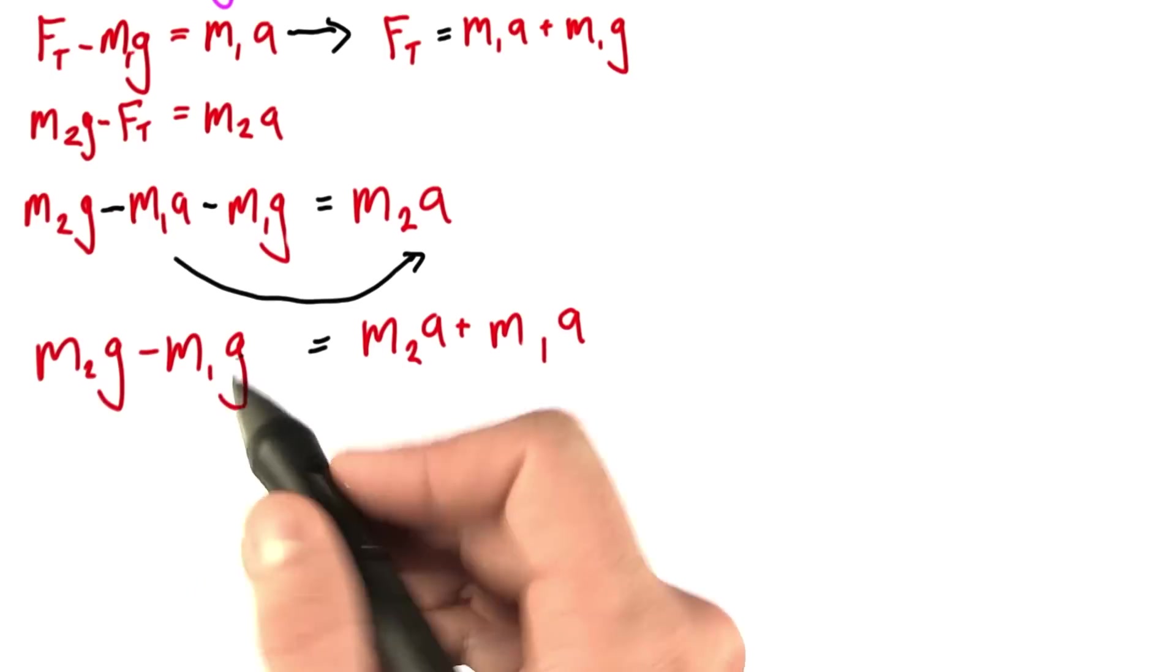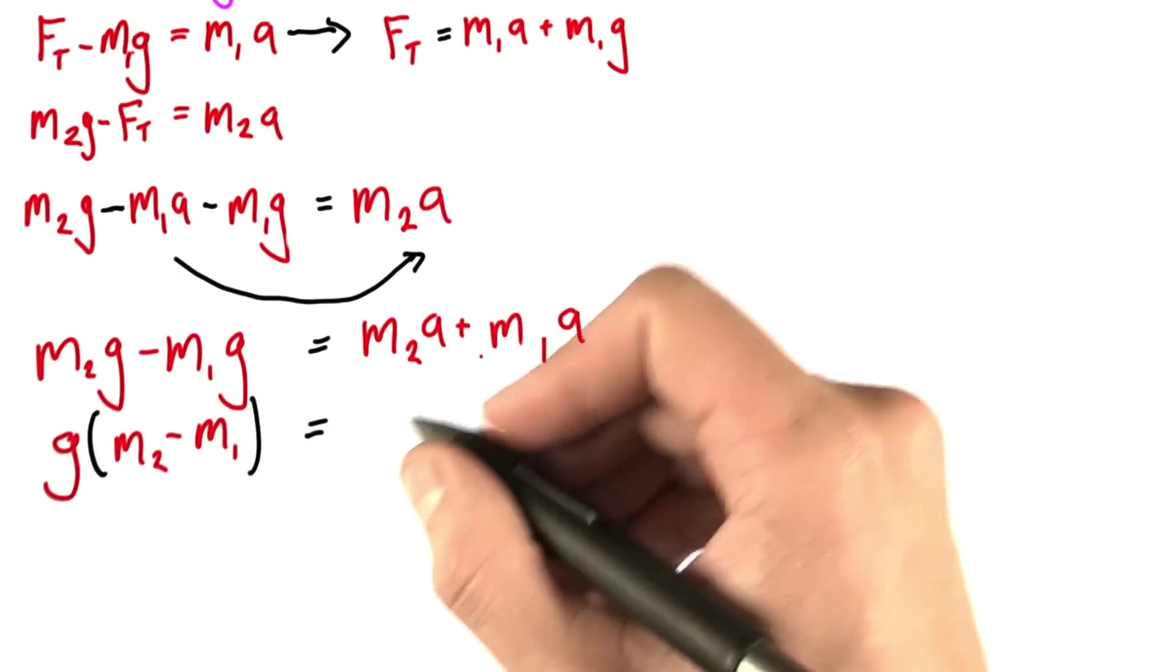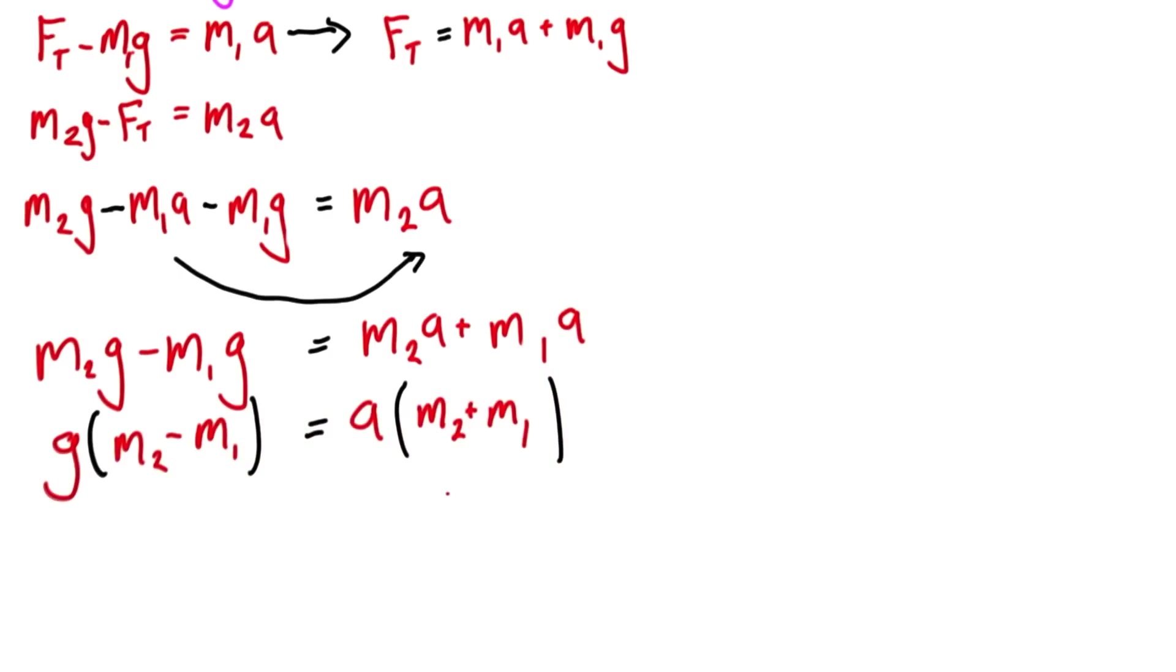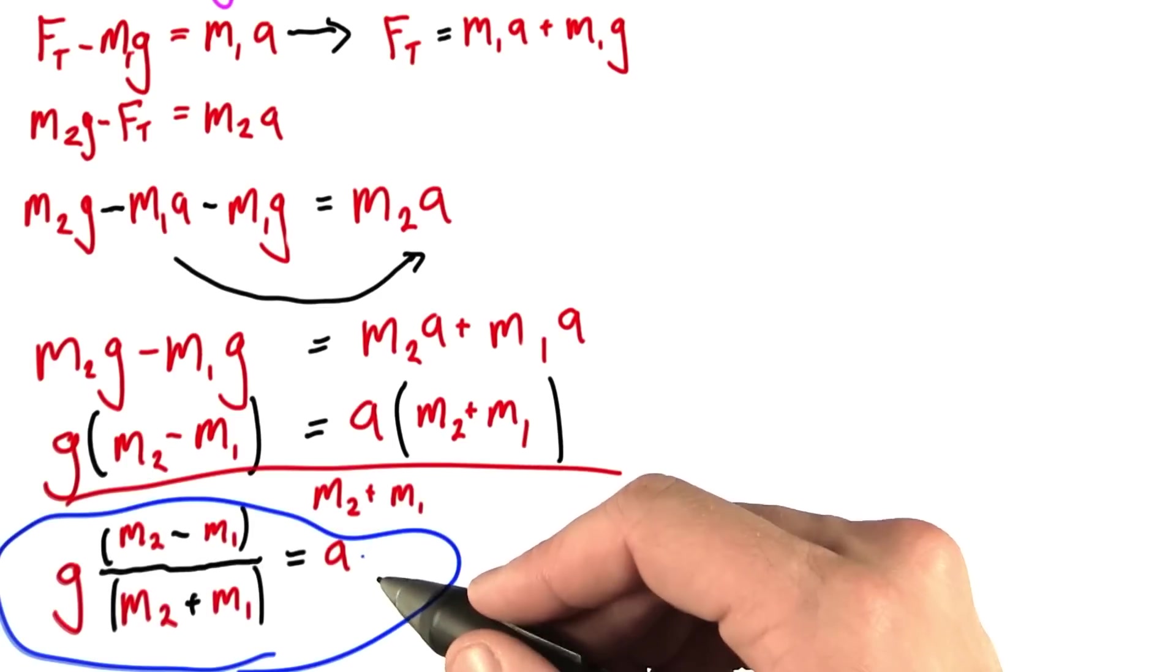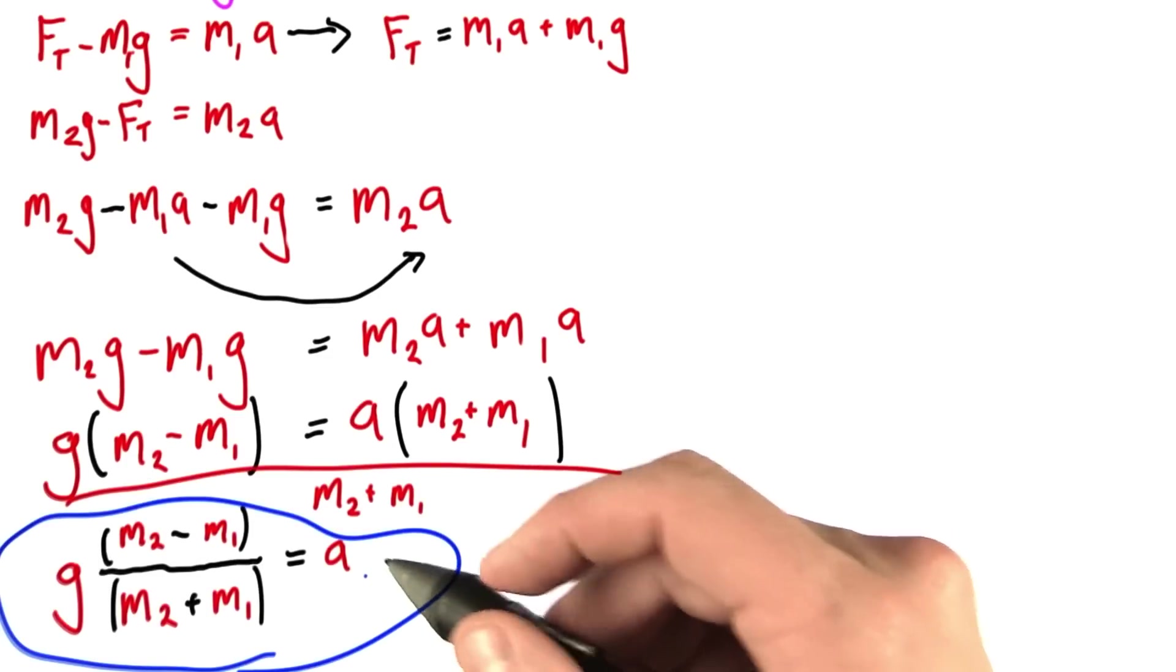So for example, each of these terms has a g in it, and each of these terms has an a in it. And now we're really close. Let's divide both sides by this term here. And here is our answer, and this is truly a thing of beauty. And let me explain why.